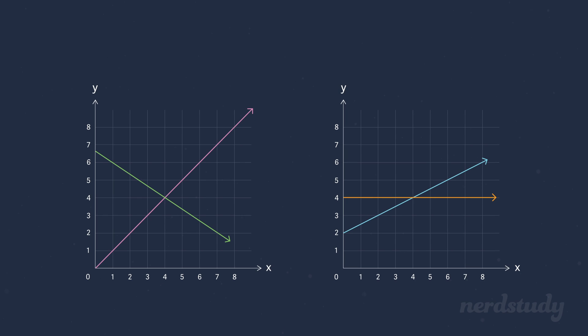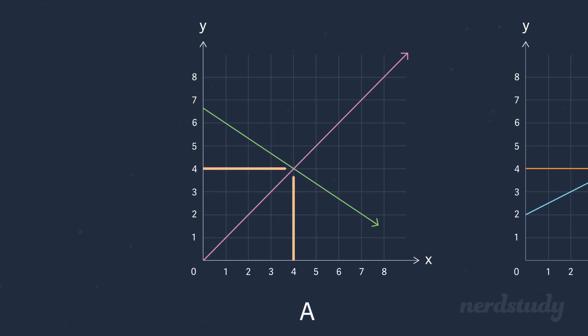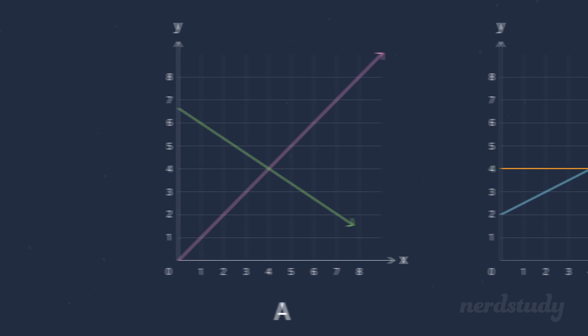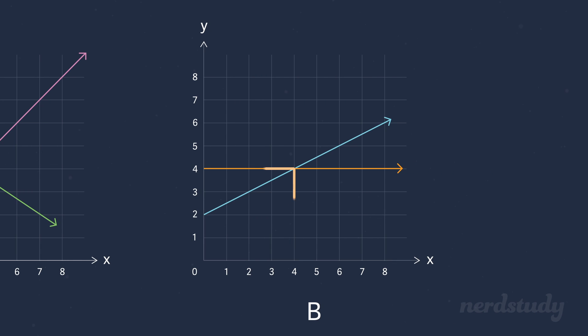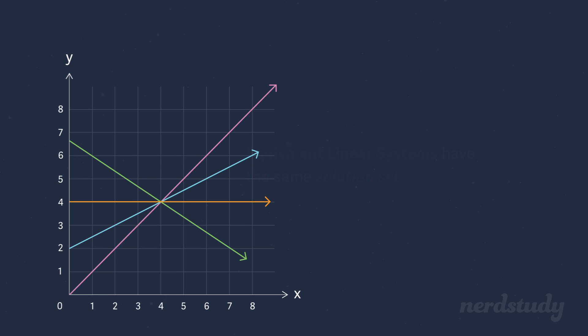So, imagine two sets of two lines. Let's call the first set A and the second set B. If the two lines in A intersect at the same point as the point where the two lines for B intersect, then we can say that the linear systems are equivalent.